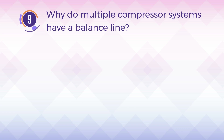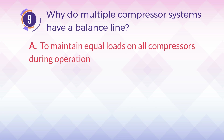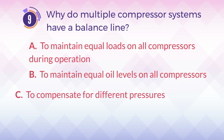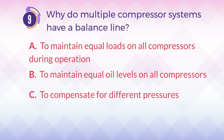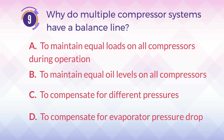Number 9. Why do multiple compressor systems have a balance line? A. To maintain equal loads on all compressors during operation. B. To maintain equal oil levels on all compressors. C. To compensate for different pressures. D. To compensate for evaporator pressure drop.